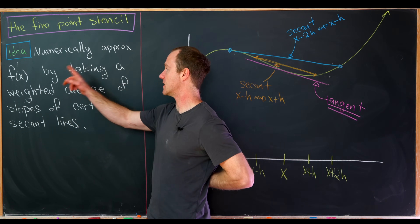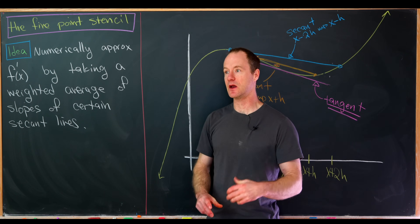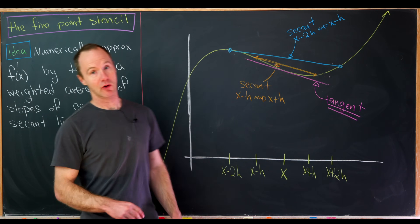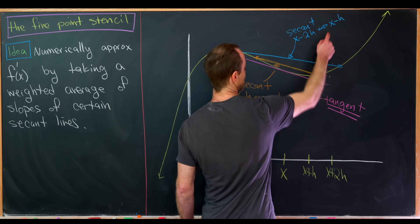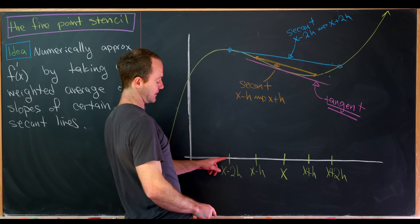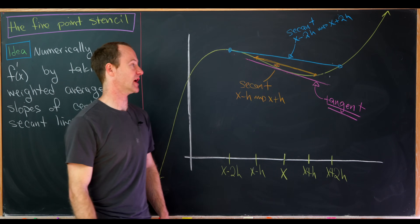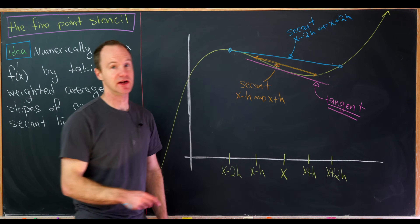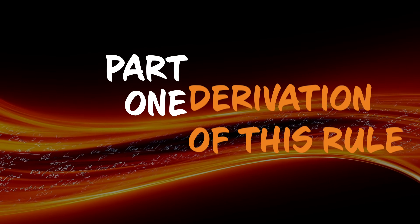We'd like to numerically approximate f prime by taking a weighted average of slopes of certain secant lines, and which secant lines we choose give rise to different strategies for numerically differentiating. In the case of the five-point stencil, we'll take the secant line between x minus 2h and x plus 2h — that's the blue line — and the secant from x minus h to x plus h, the orange line. Our goal is to find a weighted average of these slopes to closely approximate the slope of the actual tangent, the magenta line. Let's get into the derivation.